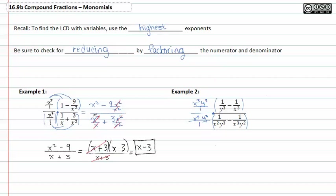When I distribute this through, I get x to the third y to the third all over y to the third, minus x to the third y to the third all over x to the third, over x to the third y to the third all over x squared, minus x to the third y to the third all over x to the third y squared. Now we have to reduce our fractions — that was the whole point of multiplying through by the highest exponents.